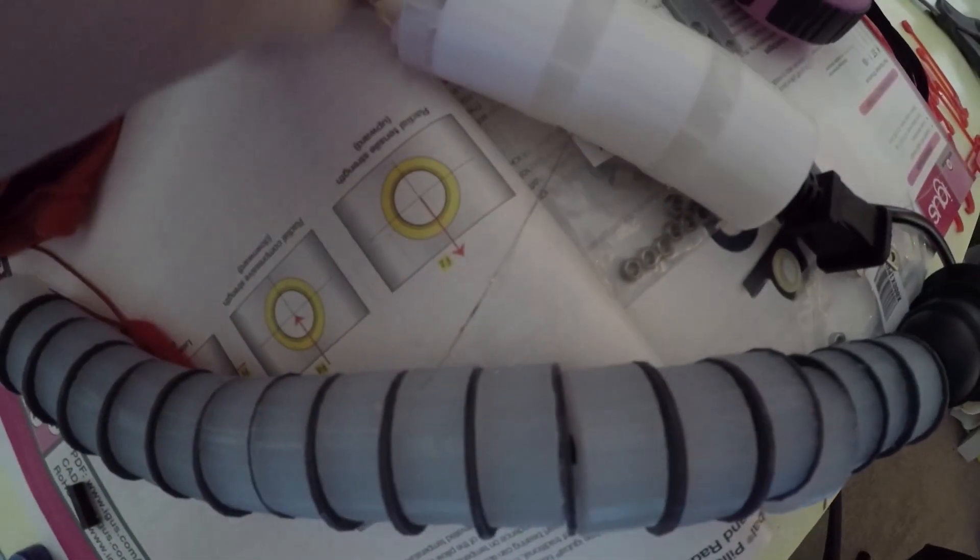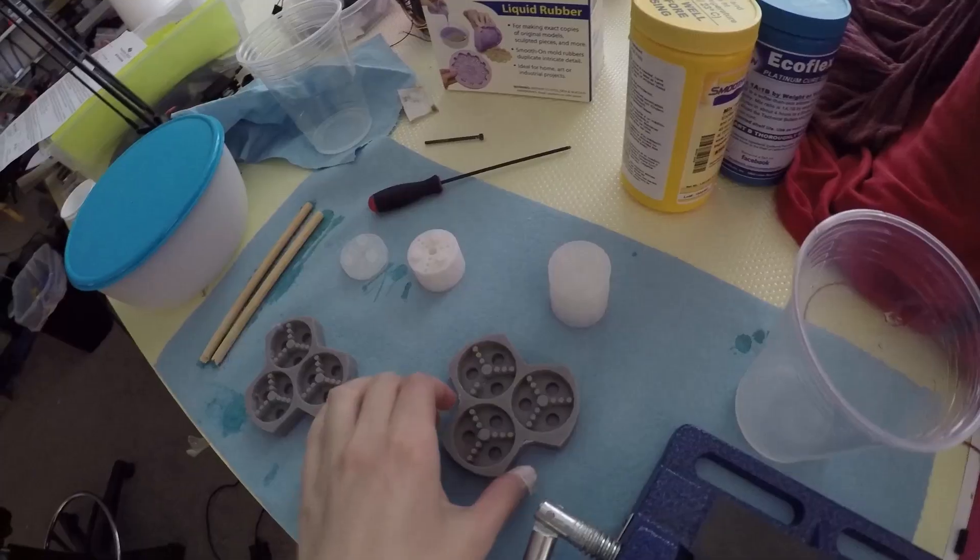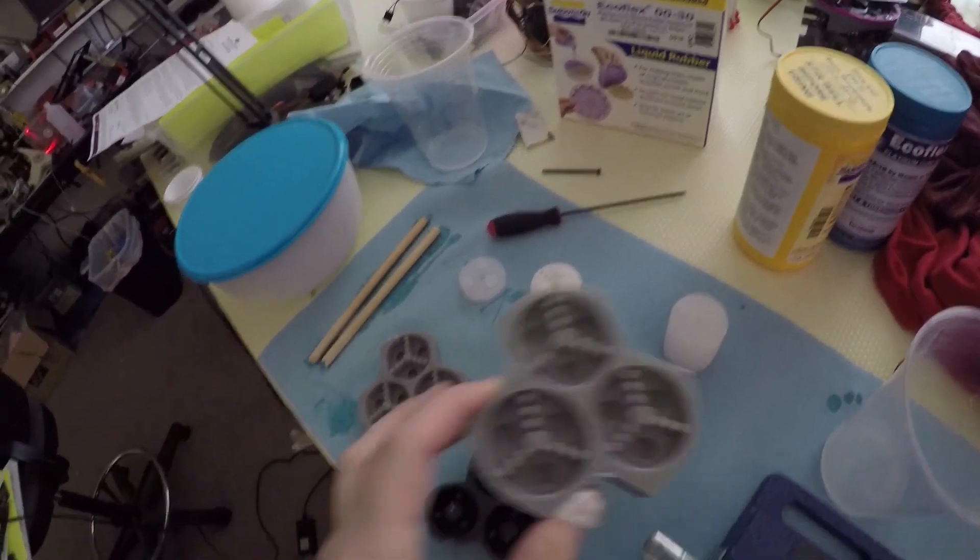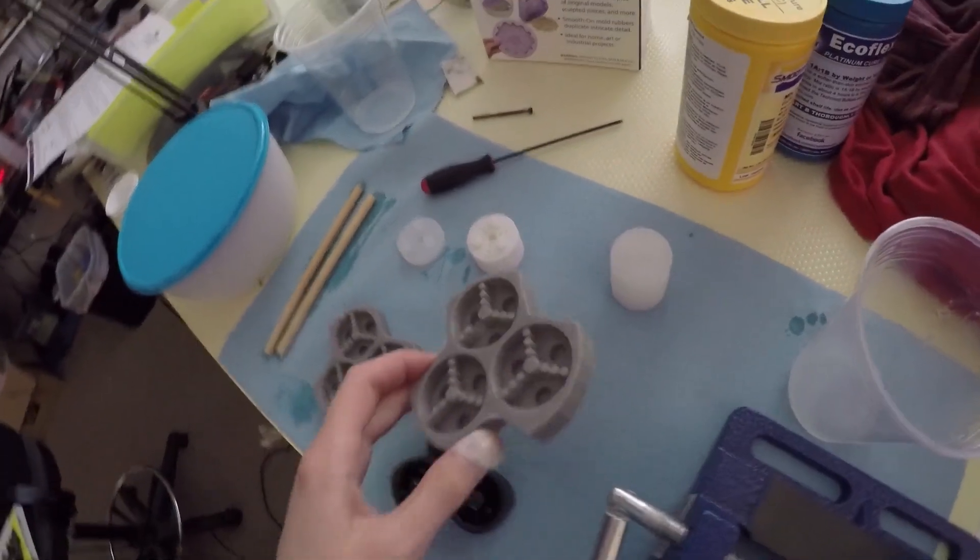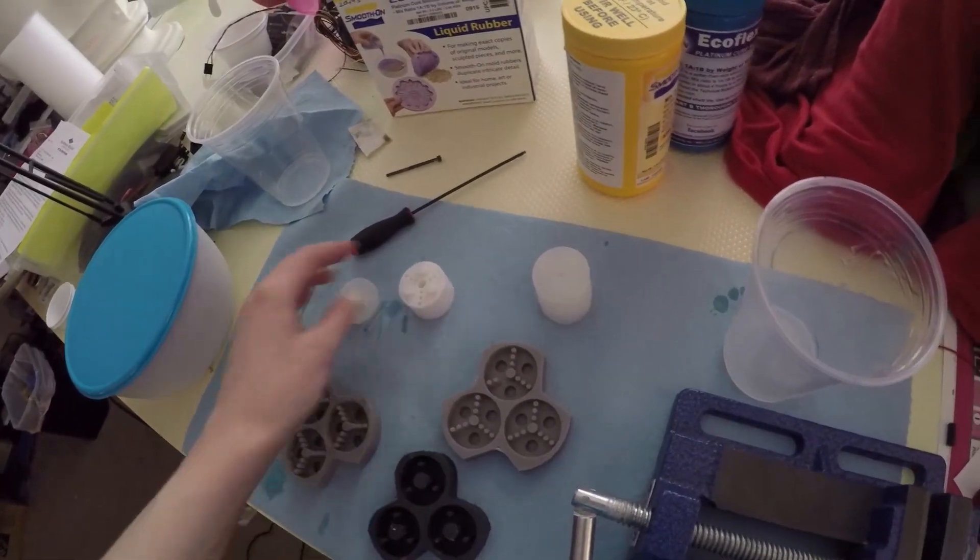This is going to leave less material to compress and it should alleviate some of the floppiness that I had with the first iteration. So I'm gonna go ahead and modify this and hopefully my second go at casting these parts will turn out a bit better.